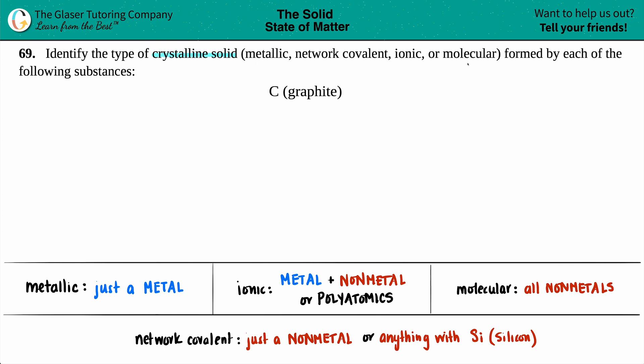There are four different types of crystalline solids. We just have to figure out which one carbon graphite is. I wrote down a little cheat sheet down here for you guys to memorize for your next quiz or test, but we'll work from left to right to pinpoint what type of crystalline solid this is.